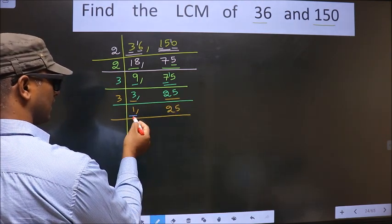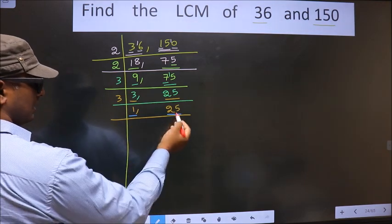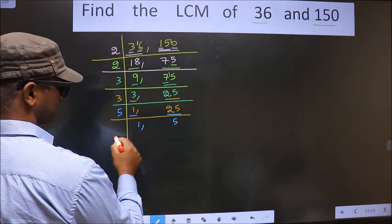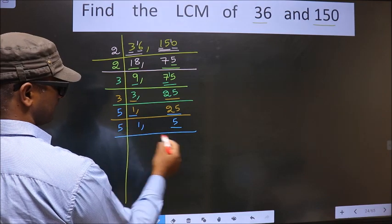Now here we got 1, so we focus on the next number, 25. 25 is 5 times 5 equals 25. Now we have 5. 5 is a prime number, so we take 5 once.